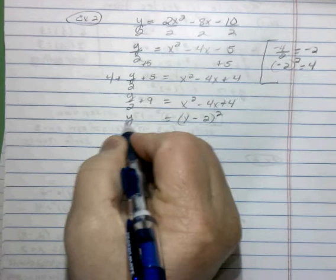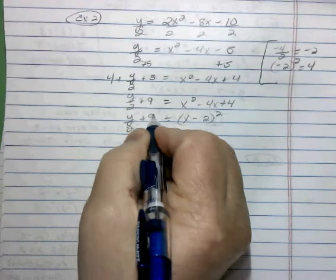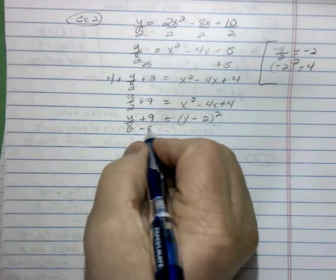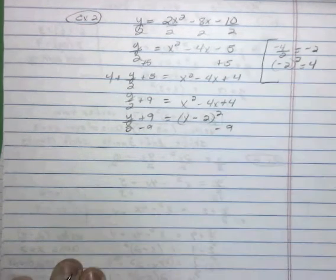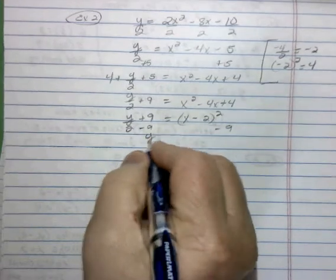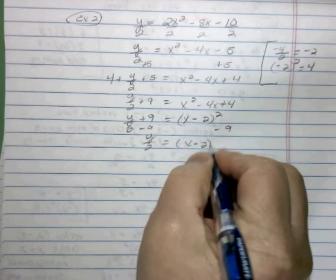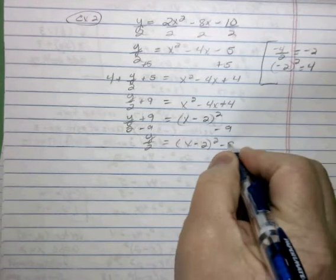Just bringing down the left side. Now we're going to get the 9 back across. So we subtract 9 from both sides. y divided by 2 equals x minus 2 squared minus 9.